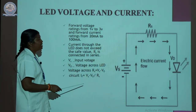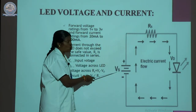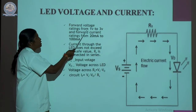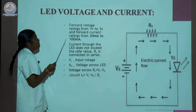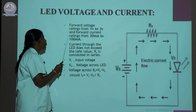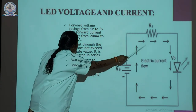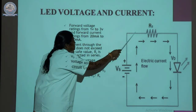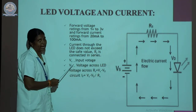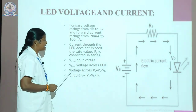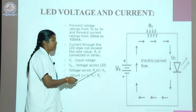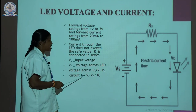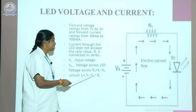The voltage and current of an LED: VS is the input voltage, RS is the series resistor, and V is the voltage across the LED. The forward voltage rating ranges from 1 V to 3 V, and the forward current rating ranges from 20 mA to 100 mA. The current through the LED must not exceed its rated value, so RS is connected in series. The voltage across RS equals VS minus VD. The equation for LED current is: IF = (VS − VD) / RS.